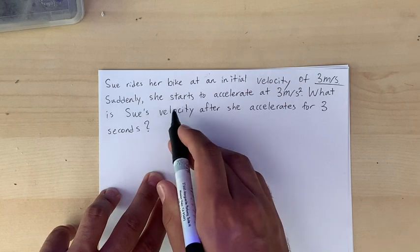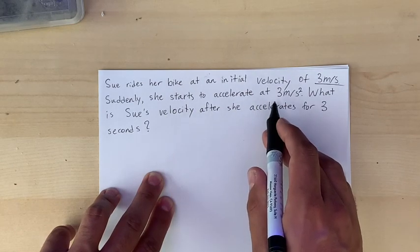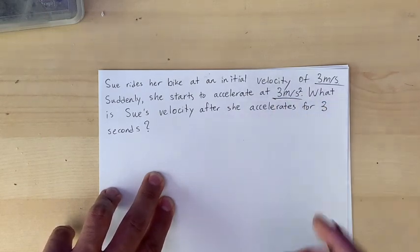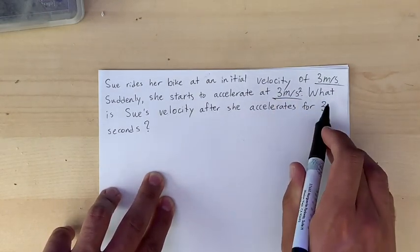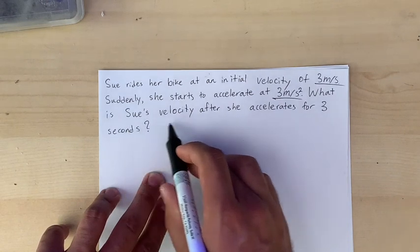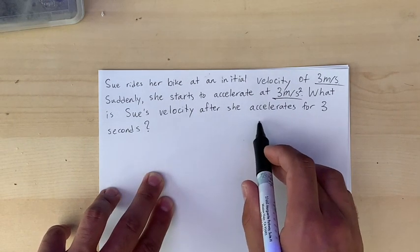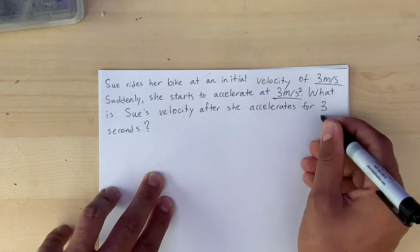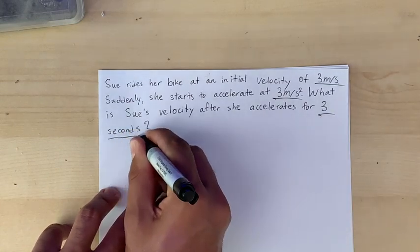Next sentence. Suddenly she starts to accelerate at three meters per second squared. Interesting number, definitely gonna underline that. So now's the question. What is Sue's velocity after she accelerates for three seconds? So I will underline that final number as well.